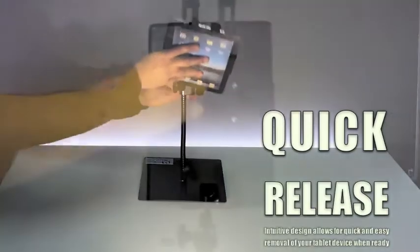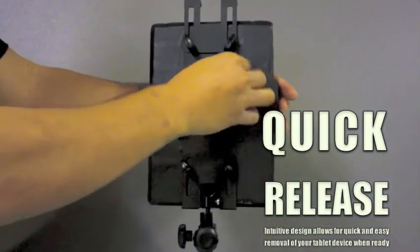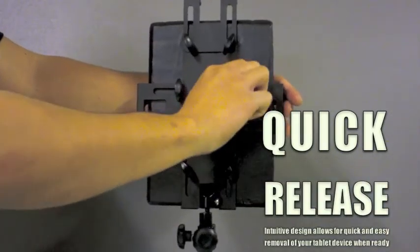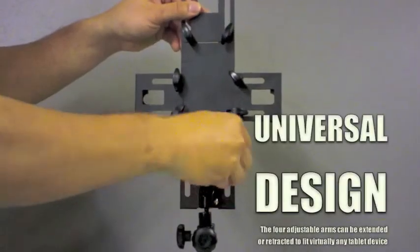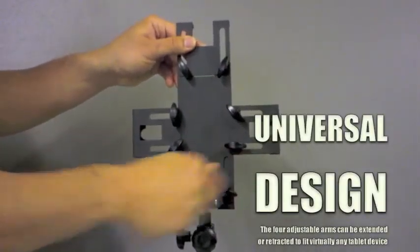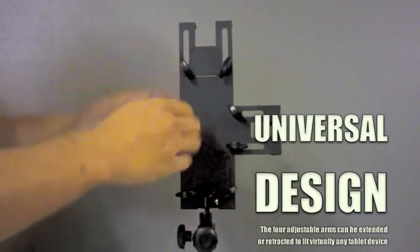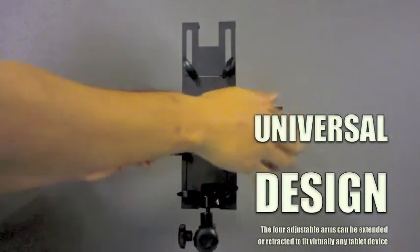The universal sleeve allows the tablet to be removed from the holder with ease. With the turn of a few knobs, the arm slides out to allow the tablet's removal. This feature is what allows the tab mount to be universal, fitting virtually any tablet even while it is being used with a protective case or cover.